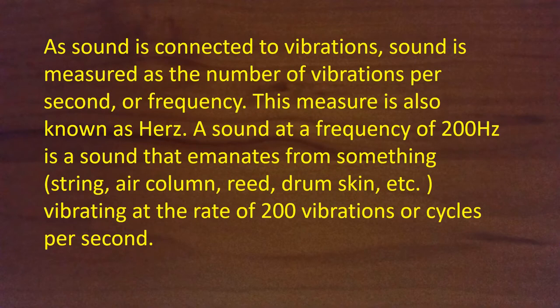As sound is connected to vibrations, sound is measured as the number of vibrations per second, or frequency. This measure is also known as hertz. A sound at a frequency of 200 hertz is a sound that emanates from something — it could be a string, air column, reed, drum skin, etc. — vibrating at the rate of 200 vibrations or cycles per second.